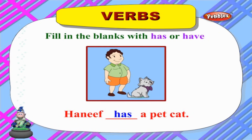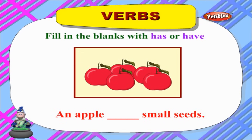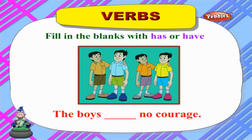'Hanif ___ a pet cat' — Hanif is a singular noun, so we use 'has': 'Hanif has a pet cat.' 'An insect ___ six legs' — insect is singular, so we use 'has': 'An insect has six legs.' 'An apple ___ small seeds' — apple is singular, so we use 'has': 'An apple has small seeds.'